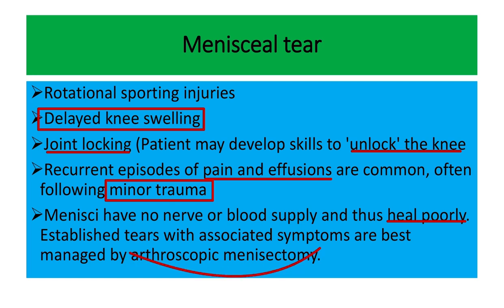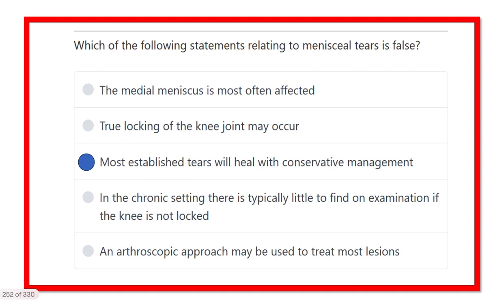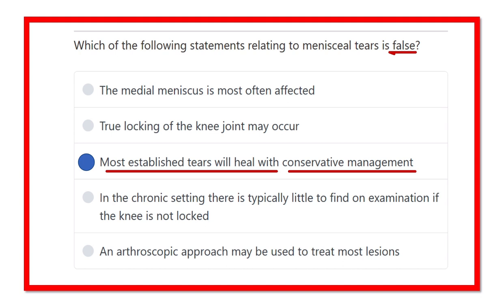Conservative treatment almost always fails in the case of menisci tear and we should go for surgery. So, what is the false option regarding the menisci tear? Conservative management usually is not sufficient. Here we can see the option states that most established tears will heal with conservative treatment — this is not true because most of them require an arthroscopic approach.